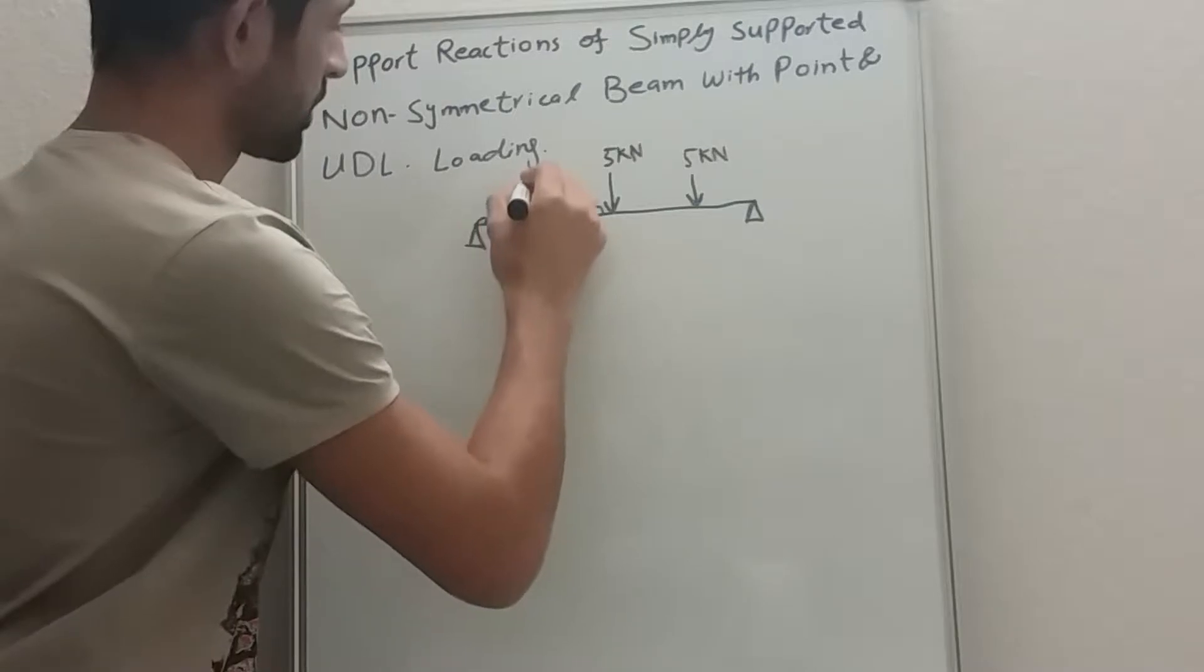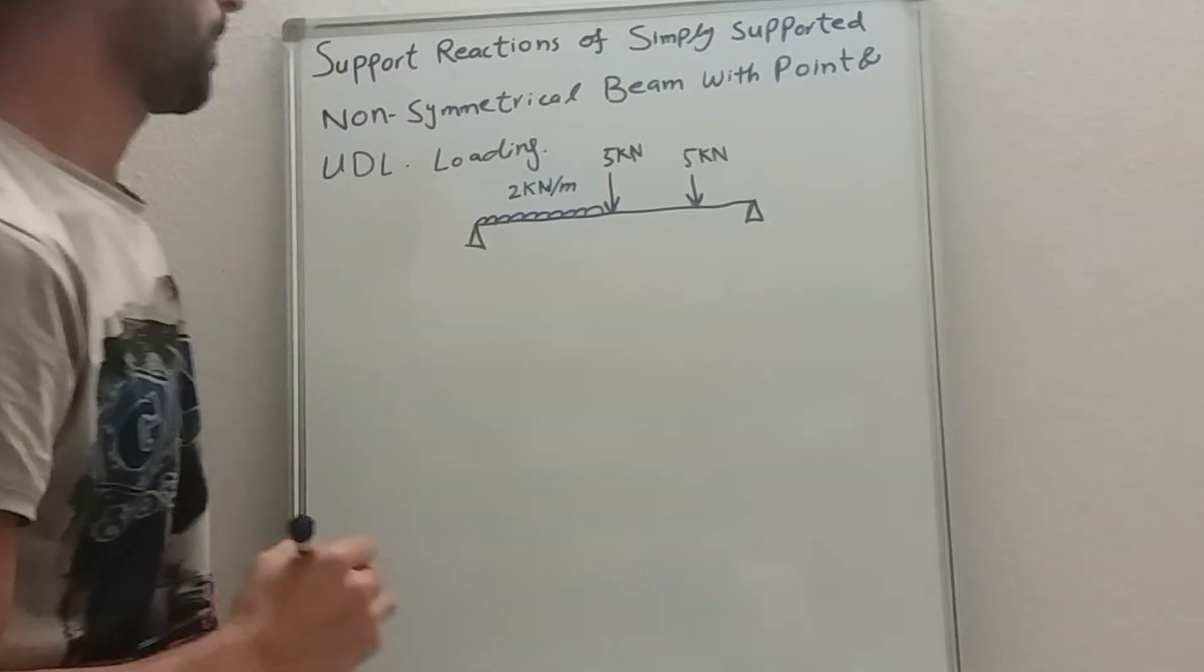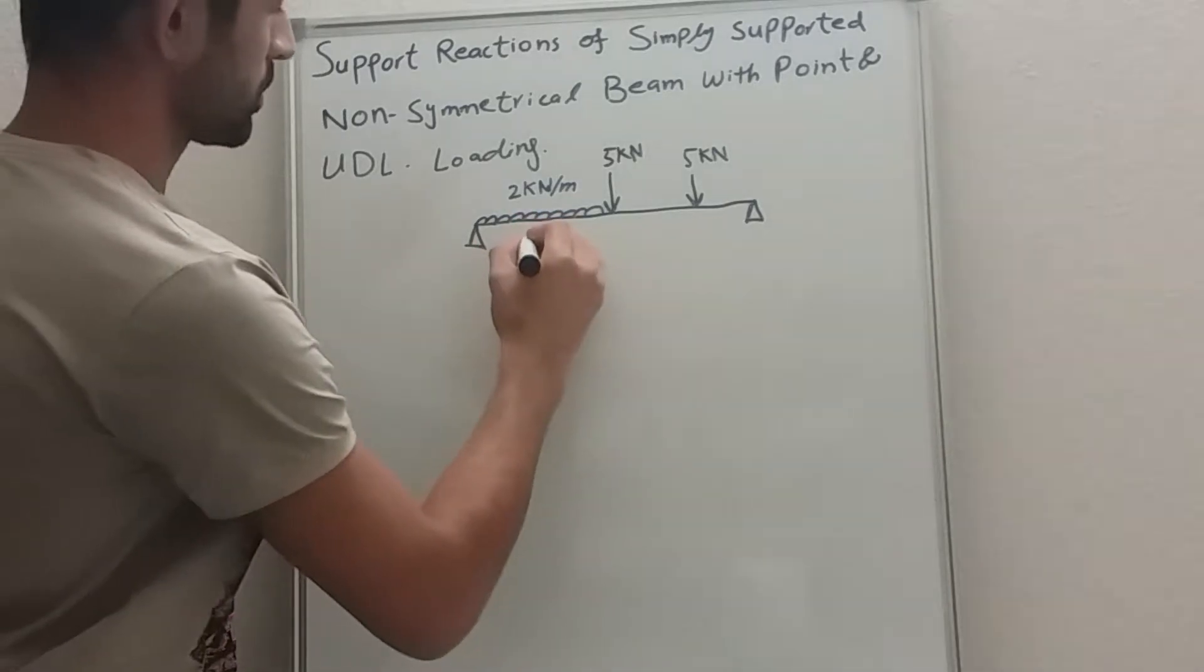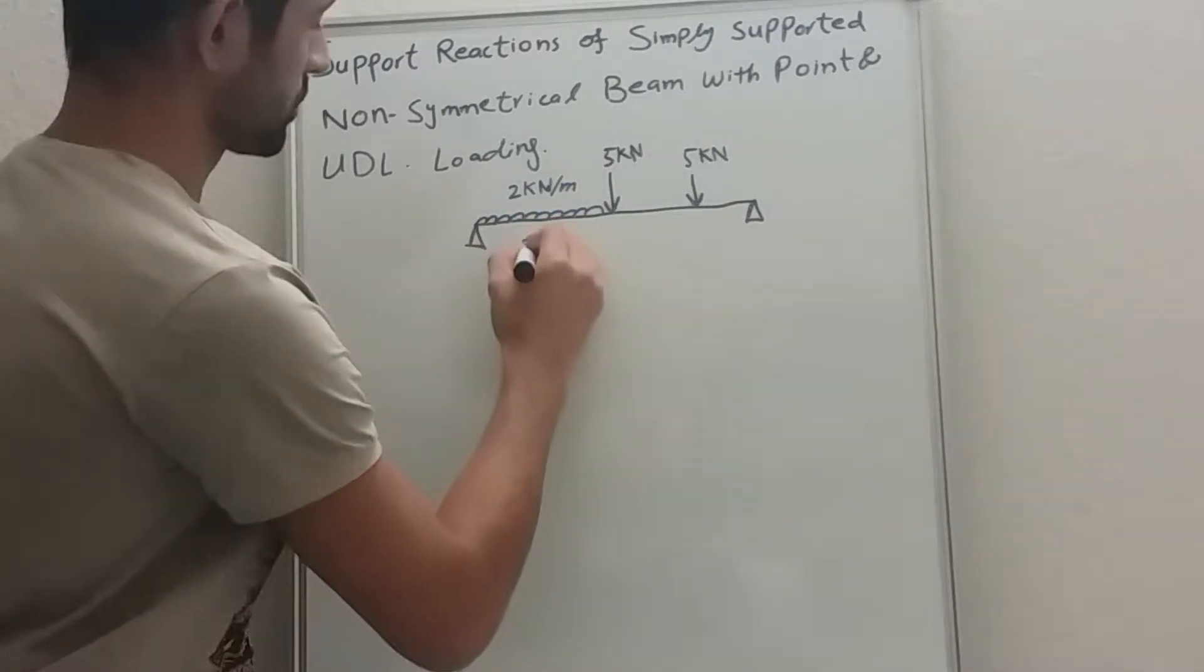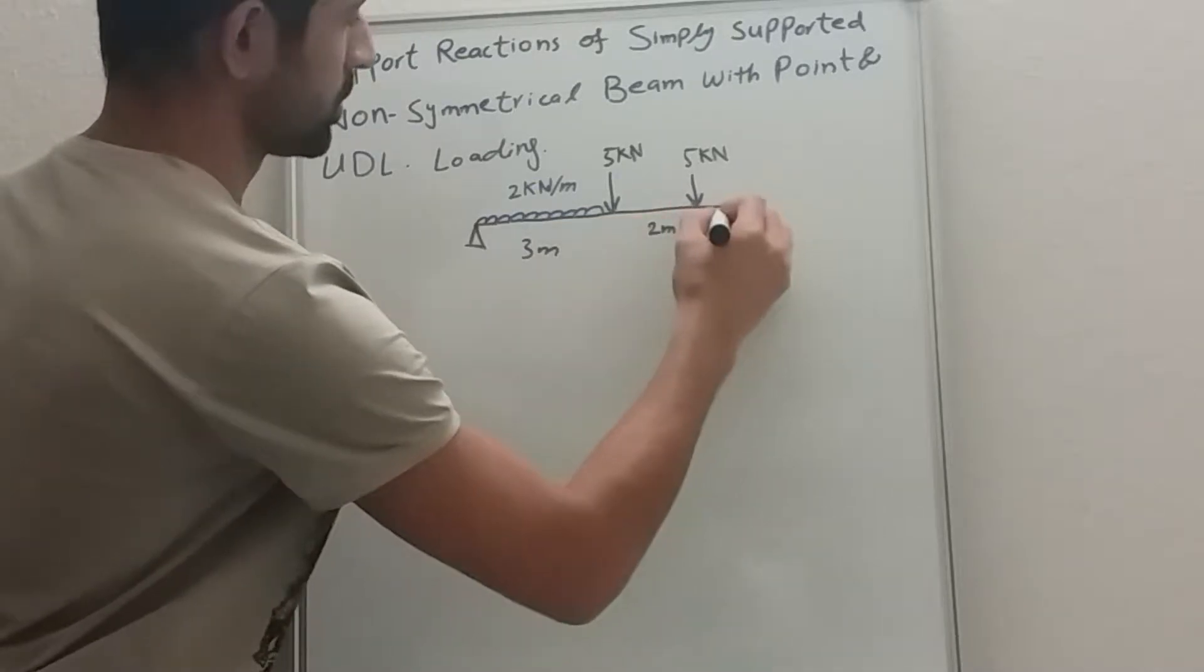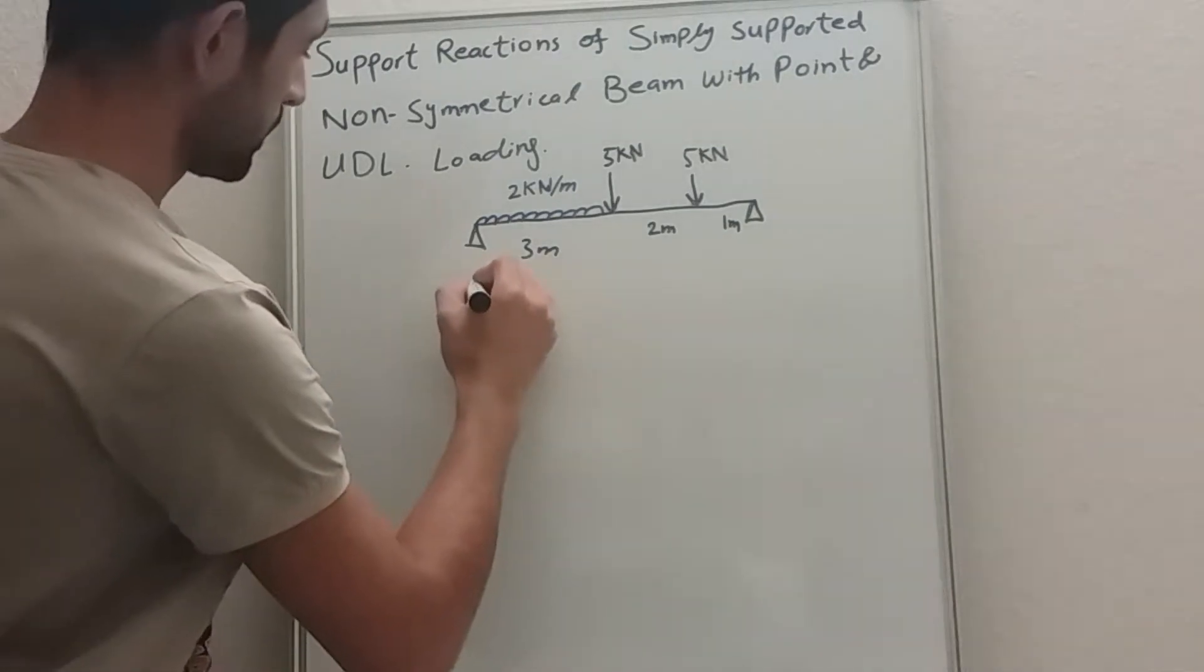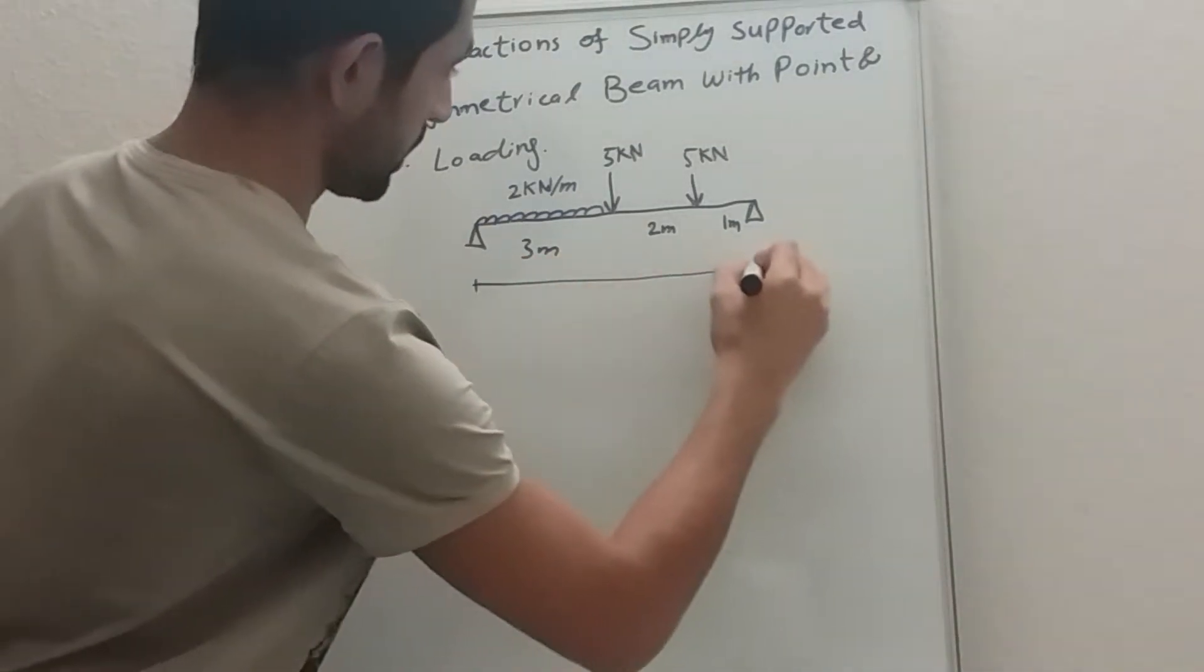With the rate of two kilonewtons per meter. Now we have three meters, this is two meters, and let's say this is one meter. Okay, so this is the span.